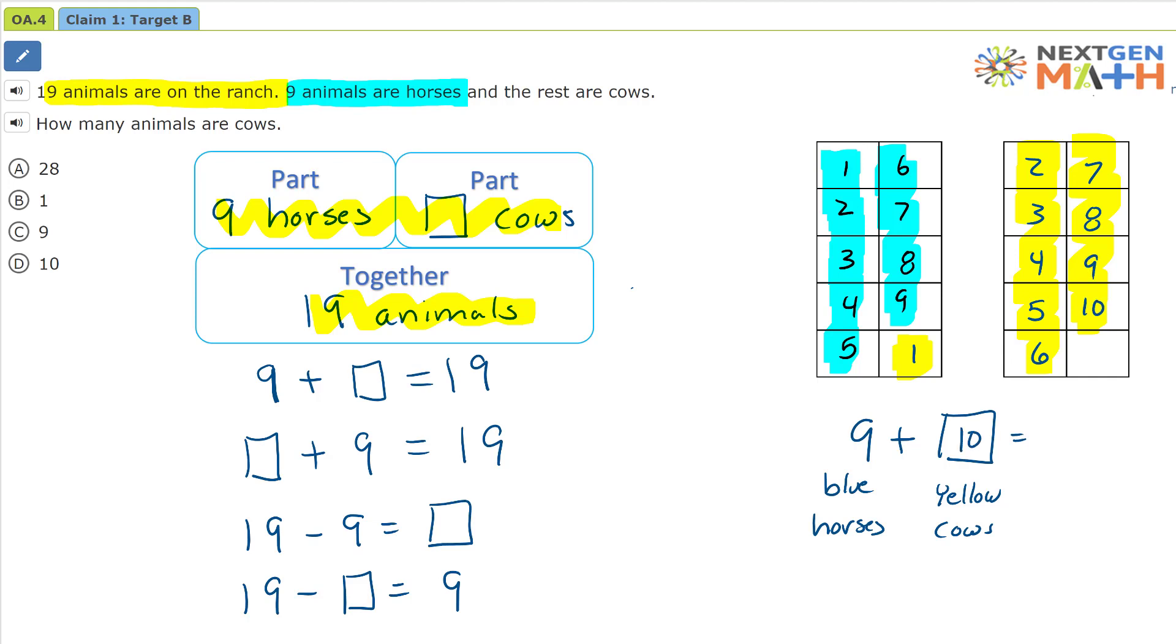So ten yellow squares represents the ten yellow cows. And all together, we have nineteen animals. So our answer is going to be ten. How many animals are cows? Well, we just figured that out to be ten.